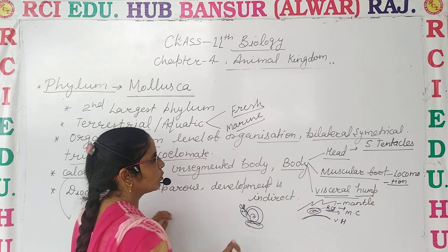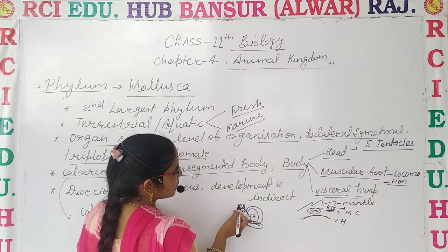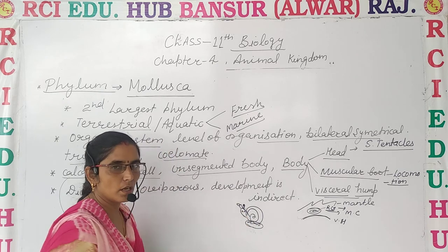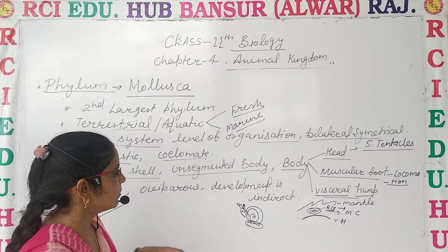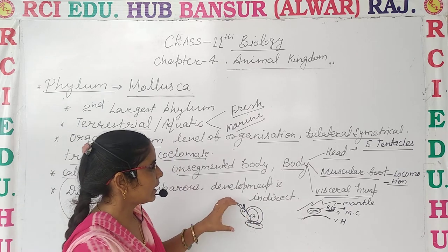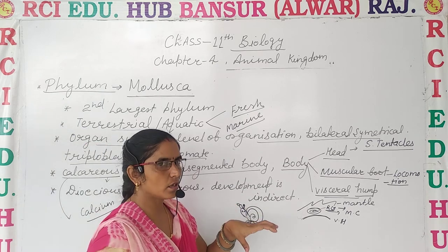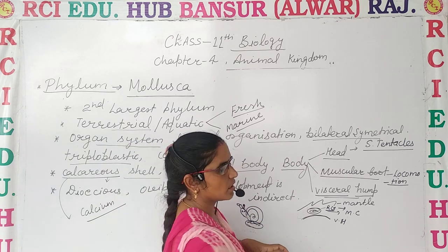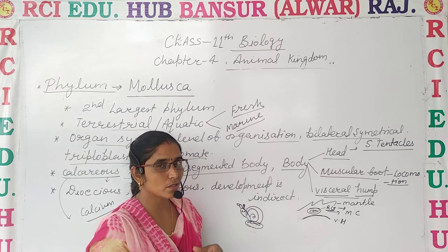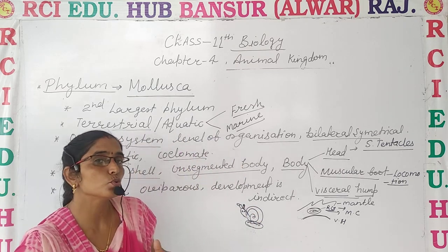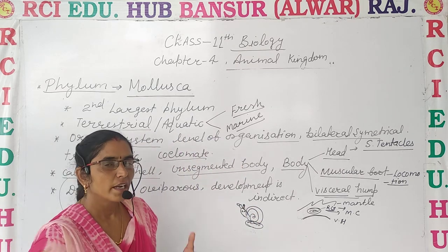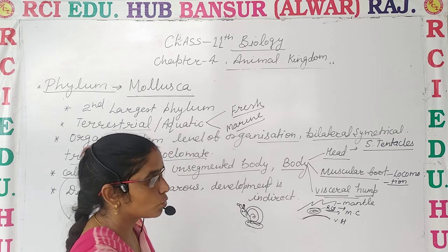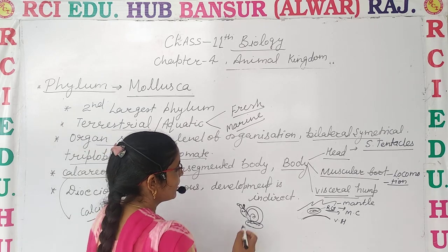Second is the head. On the head, there are some sensory tentacles. When the head comes out, it can feel the things around it — whether there is any danger or anything else.